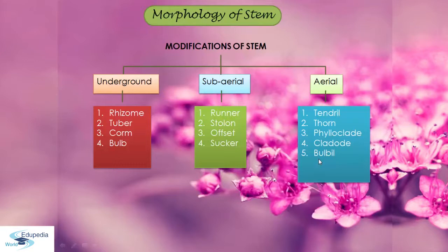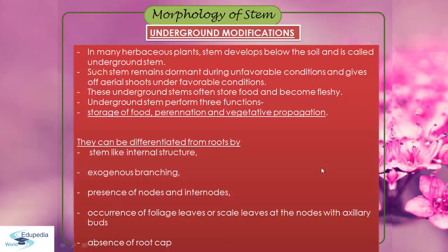Now we will see each modification in detail. First is underground modification. In many herbaceous plants, stem develops below the soil and is called underground stem. Such stems remain dormant during unfavorable conditions — dormant means inactive. These underground stems often store food and become fleshy.